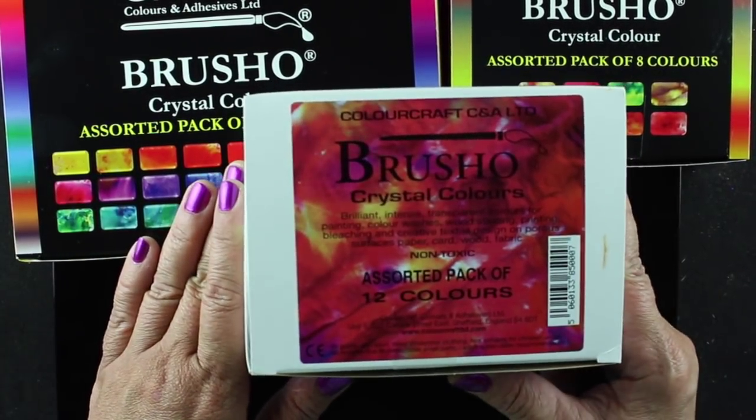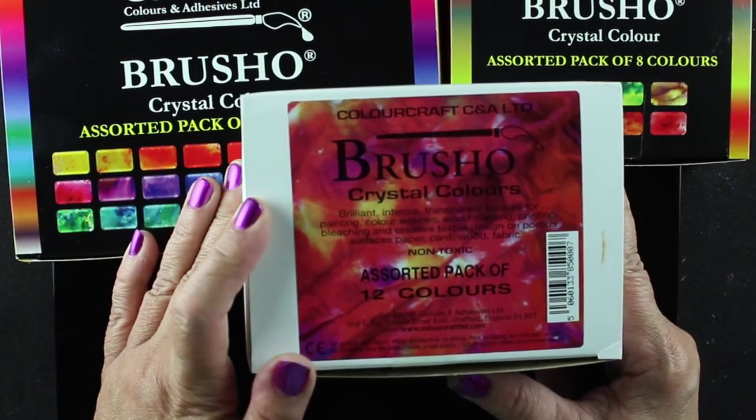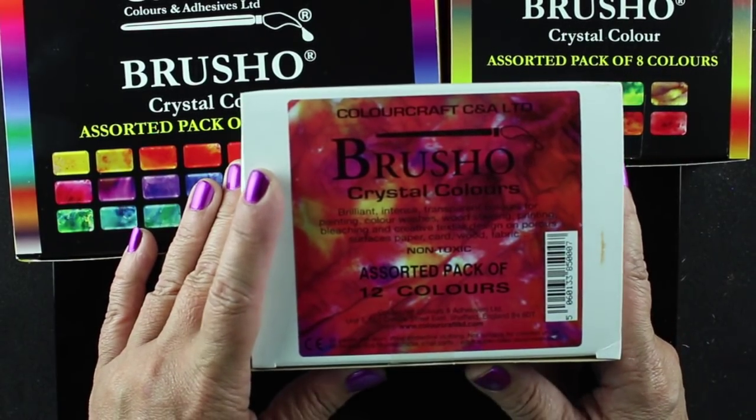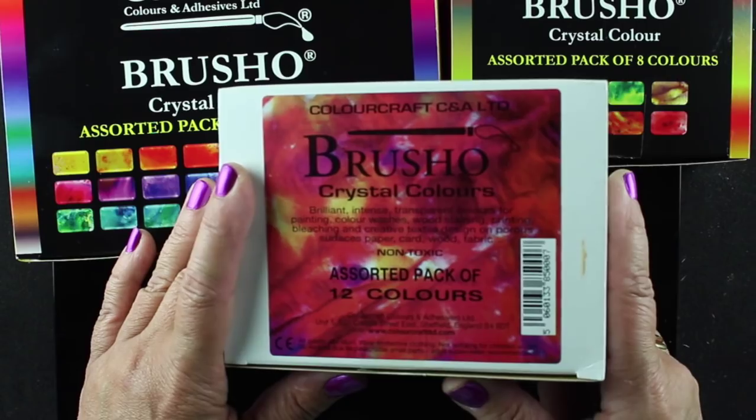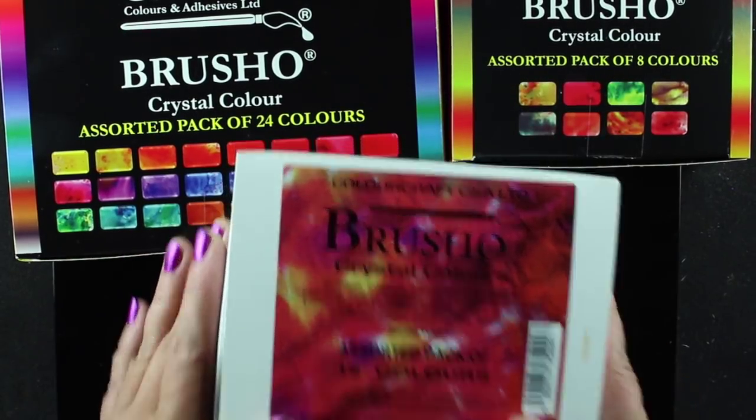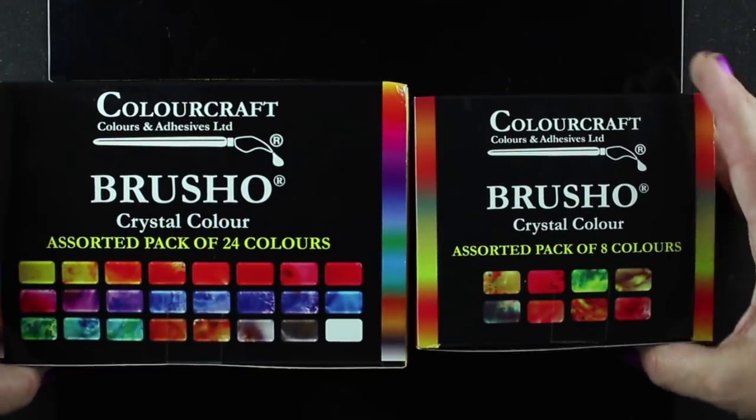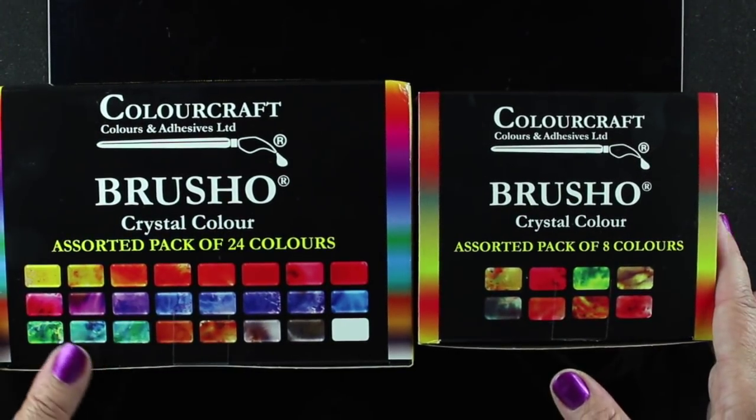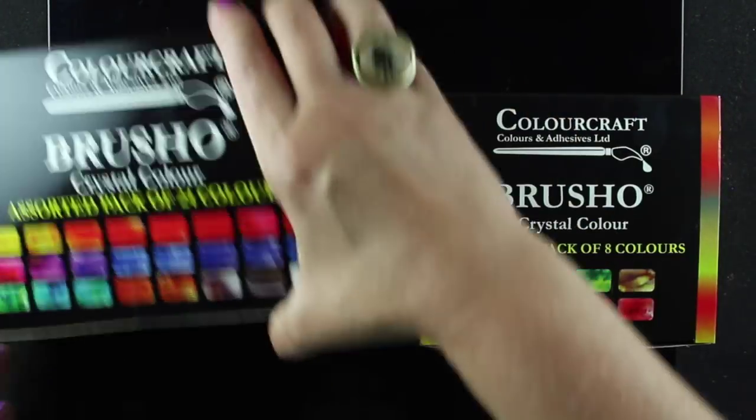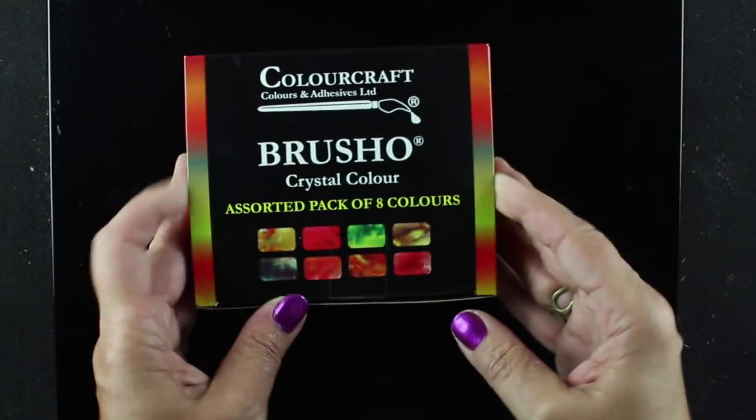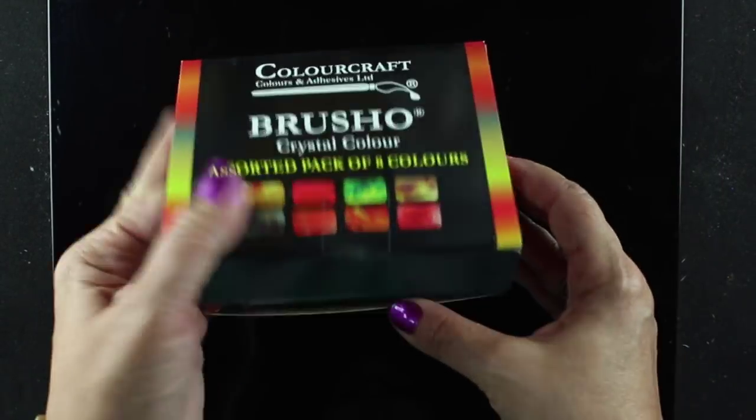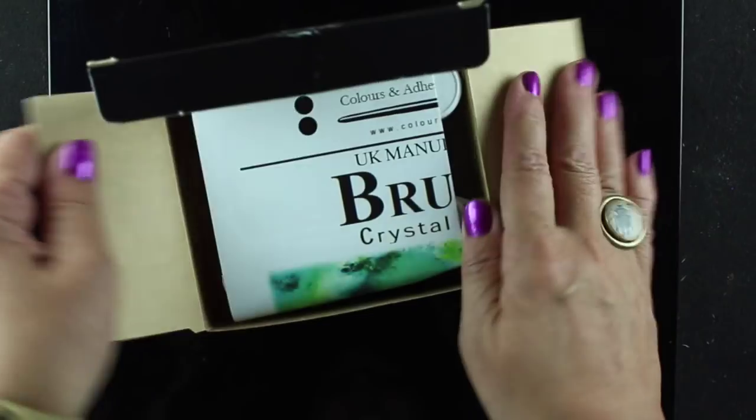If you get the 12, those colors are duplicated within the 24 pack, but the 24 and the 8 make up the entire 32 with no crossover, and the 12 and the 8 can be used with no crossover, but you don't want to crossover the 24 and the 12. Does that make sense? I'm going to write it out on my blog just in case.